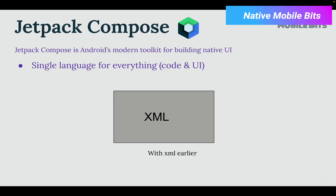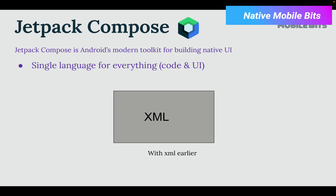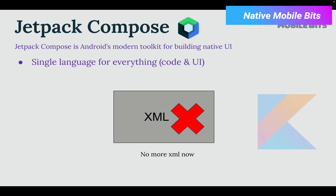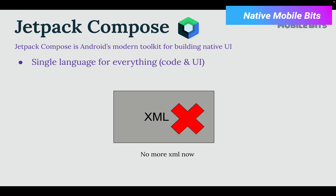The first and most important advantage of using Jetpack Compose is we can do everything inside our application development using Kotlin. There will be only a single language for everything, which will be Kotlin, and there will be no XML. So if you are familiar with Android development, you know that earlier we used XML for designing layouts. Now when we start using Jetpack Compose, we no longer need XML — only Kotlin is used for both code and UI development.